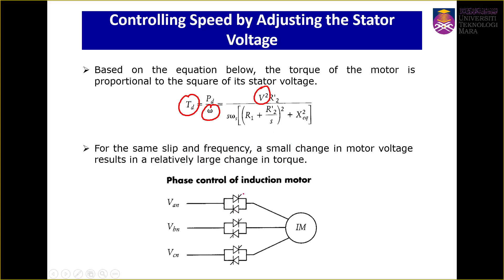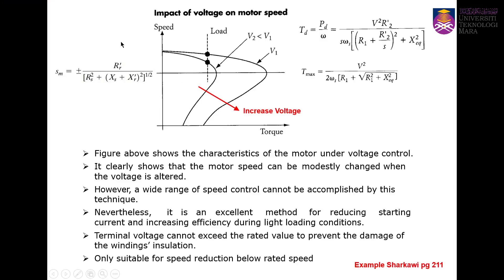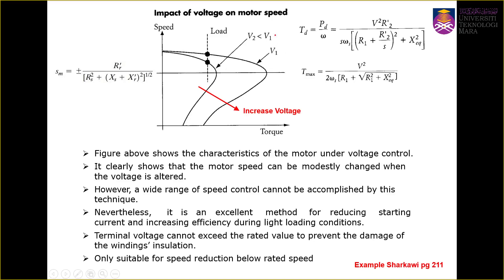We have a thyristor-controlled rectifier at the front end to control the voltage to the stator, and therefore we can control the speed. Looking at the characteristics, we have two curves: the first with voltage V1, and then we reduce the voltage to V2 — or we can increase the voltage from V2 to V1. We know that V2 is less than V1.